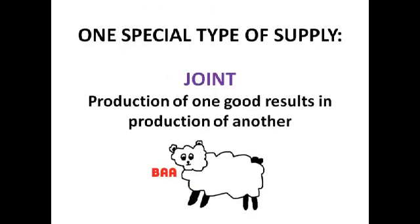One really special type of supply is joint supply, which is when the production of one good results in the production of another. For example, if we start producing more wool — we've got more sheep — more wool will automatically mean more lamb. Similarly, increased production of beef would lead to increased production of leather, because leather comes from cows.